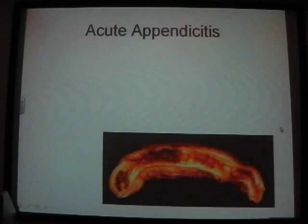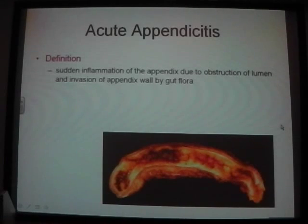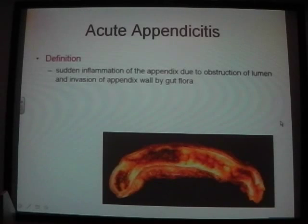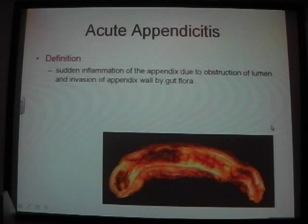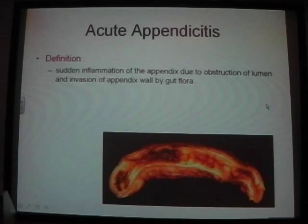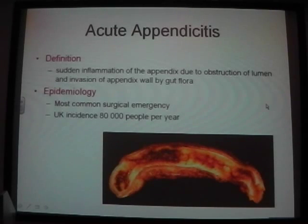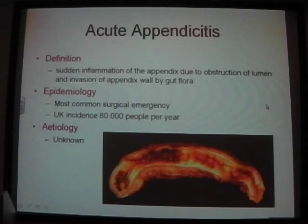Starting with acute appendicitis — it's one of the most common surgical emergencies in the UK. It's defined as sudden inflammation of the appendix due to obstruction of the lumen and then invasion of the appendix wall by gut flora. There's an incidence of 80,000 people per year.